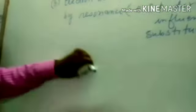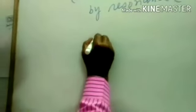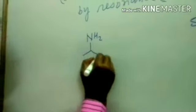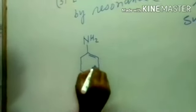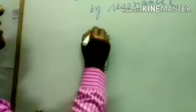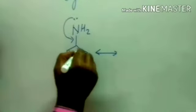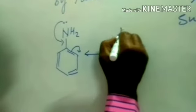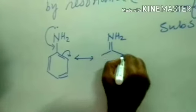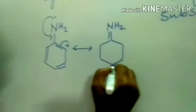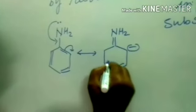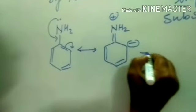Suppose the NH2 group is bonded to the benzene ring. The name of this molecule is aniline. It carries a lone pair of electrons and pushes them through resonance into the ring. Electron density increases at the ortho position, and it delocalizes in the ring.